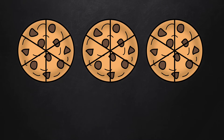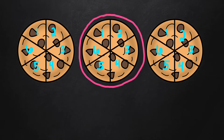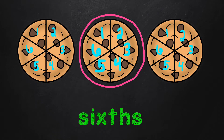Let's look at another example of how to name fractions beyond one whole. Here we have three cookies. Each cookie is cut or partitioned into six slices. When naming a fraction beyond or more than a whole, we look at one figure or object to name the fraction. Because this whole is partitioned into sixths, and the other cookies are also partitioned into six slices, we can say that these cookies are sixths.